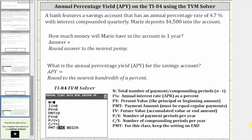The bank features a savings account that has an annual percentage rate of 4.7% with interest compounded quarterly. Marie deposits $4,500 into the account. How much money will Marie have in the account in one year? And what is the annual percentage yield, or APY, for the savings account?